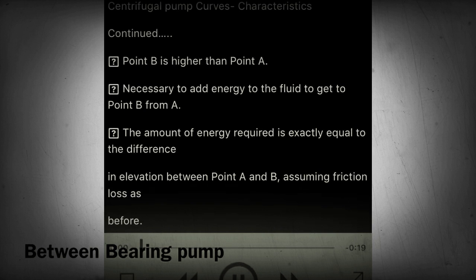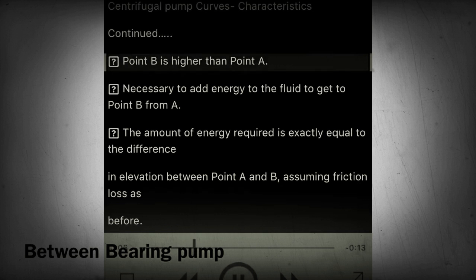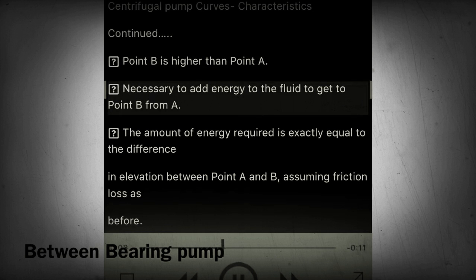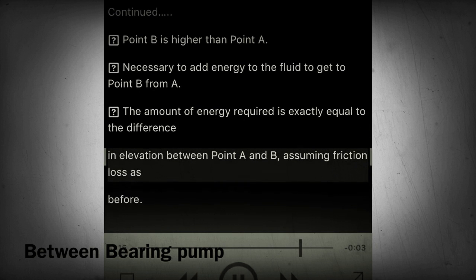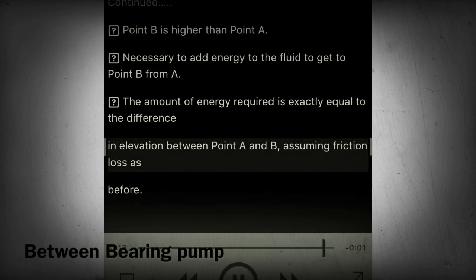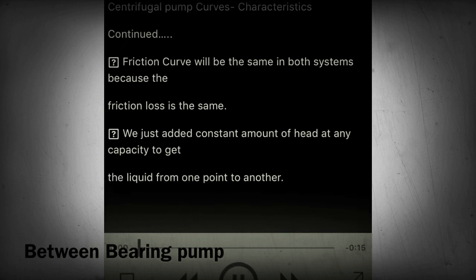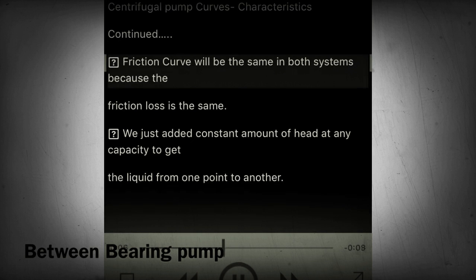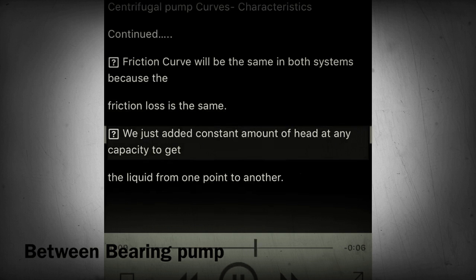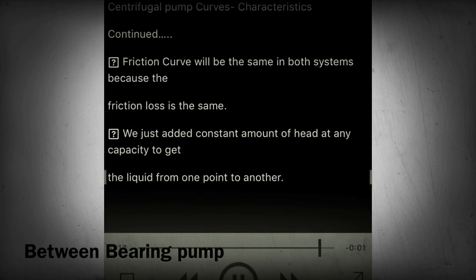Section 31-32 - When point B is higher than point A, it is necessary to add energy to the fluid to get from point A to point B. The amount of energy required is exactly equal to the difference in elevation between points A and B. Assuming friction loss as before, the friction curve will be the same in both systems because the friction loss is the same. We just added a constant amount of head at any capacity to get the liquid from one point to another.